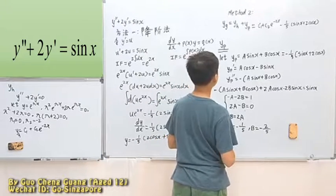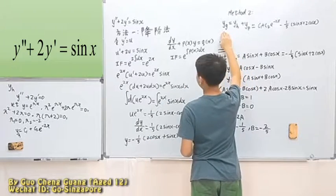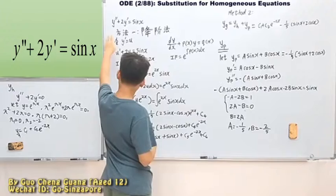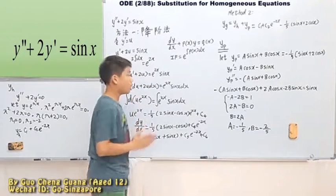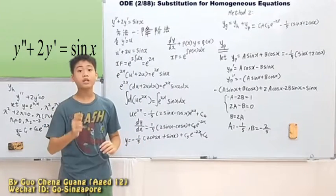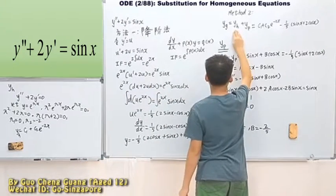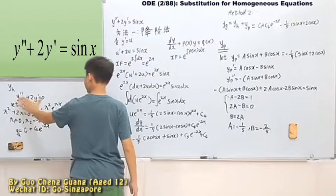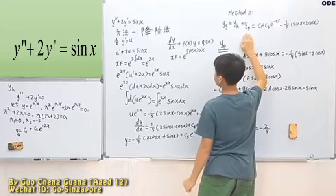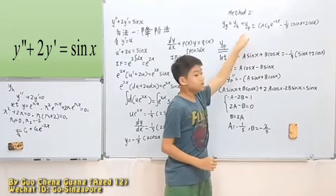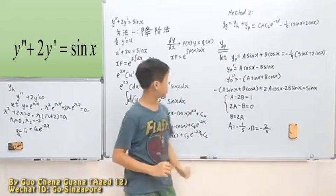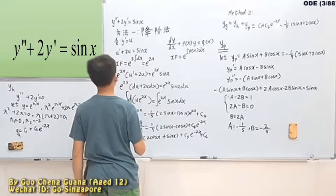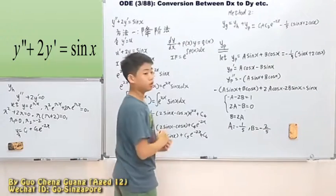So, in this second method, what do we use? This part is the general solution for this whole thing. That is, a second order, constant coefficient, linear, non-homogeneous differential equation. And in fact, it's ordinary differential equation. This part is the general solution for this is a linear, constant coefficient, second order, homogeneous differential equation. And this part is the particular solution.